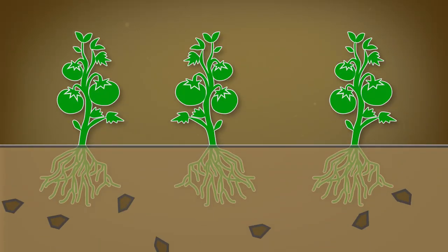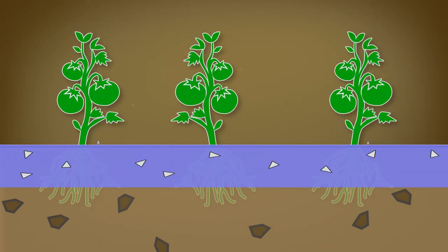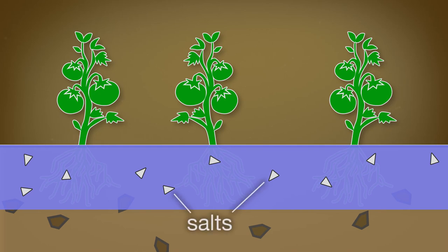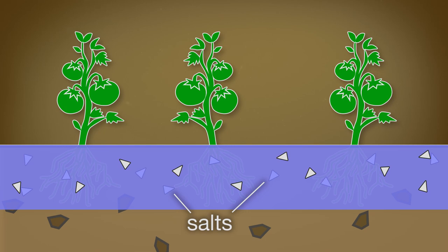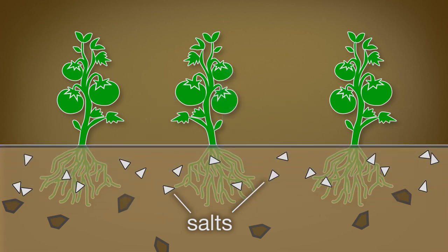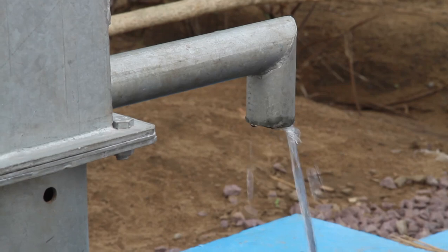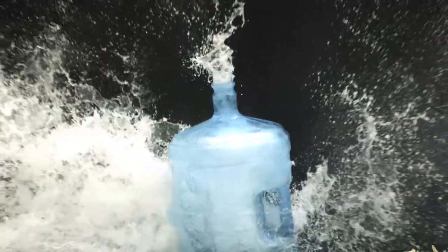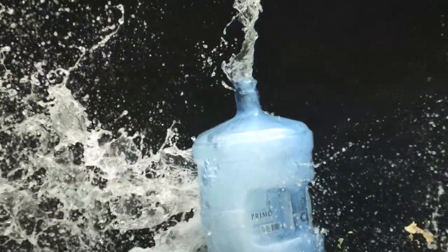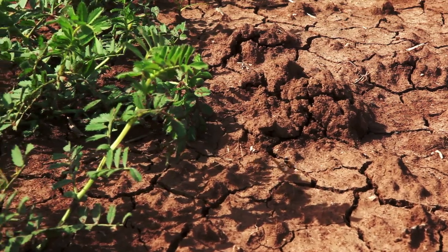Another problem with irrigation is salinization. Salinization occurs when small amounts of salts in the irrigation water become highly concentrated on soil surfaces through evaporation — the water evaporates as pure H₂O and the salts get left behind. At some point, those salts can reach toxic levels in the soil and impede plant growth. Intensive irrigation can also reduce the availability of water for other purposes, such as drinking or industrial use.